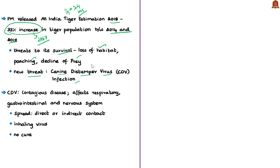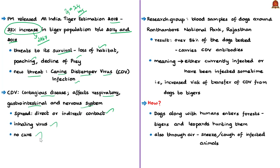Canine distemper virus is a contagious and serious disease that attacks the respiratory, gastrointestinal, and nervous systems of dogs. It spreads through direct or indirect contact, with the primary infection method being inhalation of the virus. There is no effective cure known for CDV. The virus has been transmitted to tigers from infected dogs living near wildlife sanctuaries. A study near Ranthambur National Park in Rajasthan tested blood samples from over 100 dogs and found 86% tested positive for CDV.